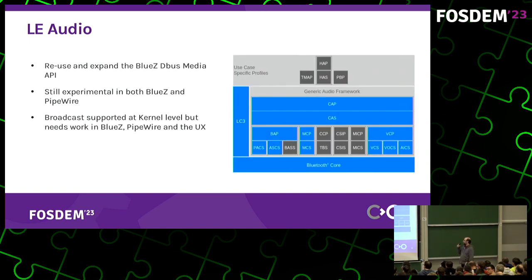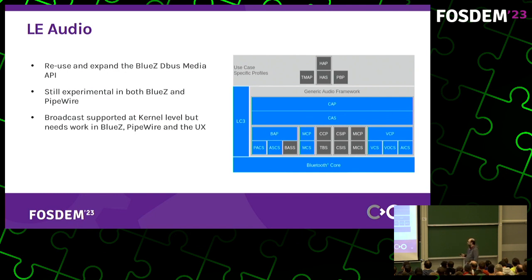This results in a lot of new profiles and specifications. The ones in blue are already supported by BlueZ and PipeWire, but as there are not many devices on the market to test with, they are still set as experimental in both BlueZ and PipeWire and need some configuration to enable. Regarding broadcast support, the low level is already supported in the kernel, but there is still some work to do in BlueZ and PipeWire, mostly around finding the correct UX to share audio or to select the broadcast you want to listen to.